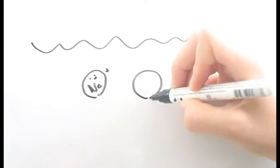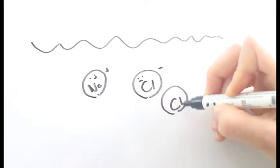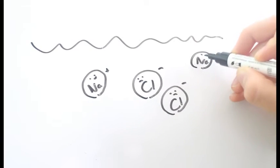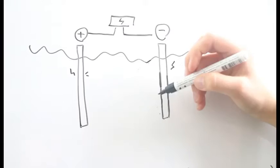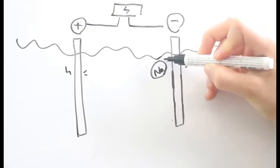For example, to produce chlorine, we have NaCl, common salt, which are in water as Na+, and Cl-. We want chlorine, which is Cl2.